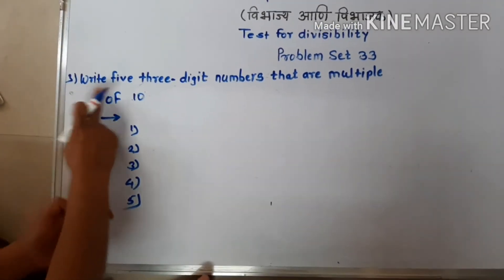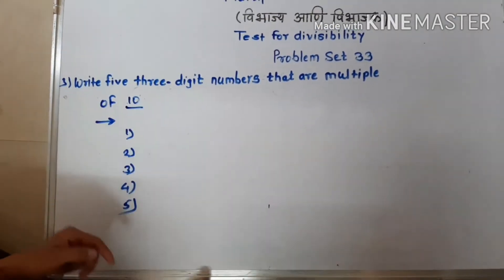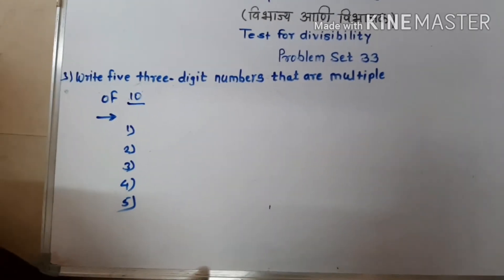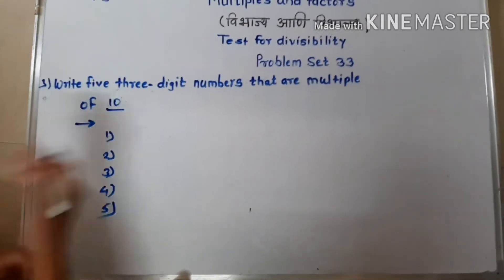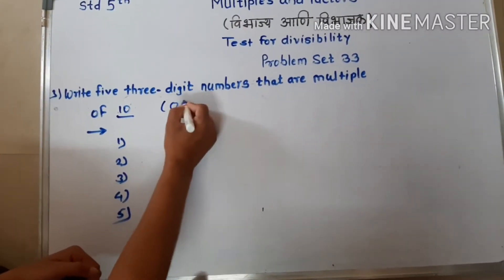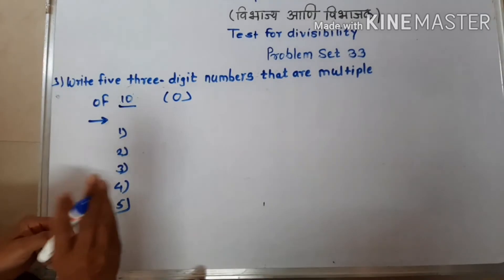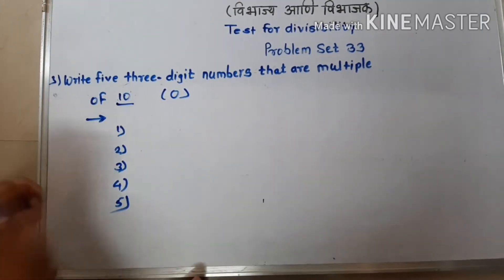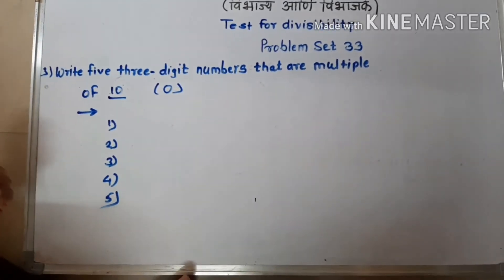Number 3: Write 5 three-digit numbers that are multiples of 10. We studied the test for divisibility by 10 — any number that has 0 in the unit place is a multiple of 10. Only those numbers whose unit place has zero are exactly divisible by 10.